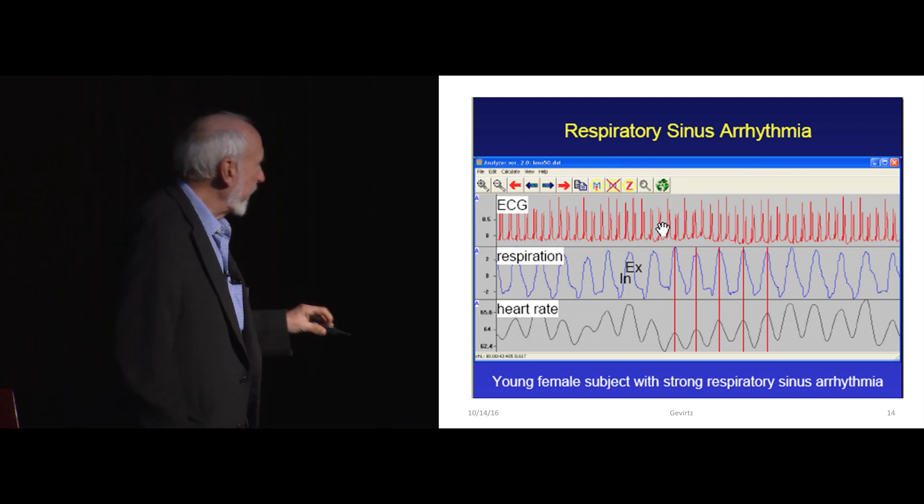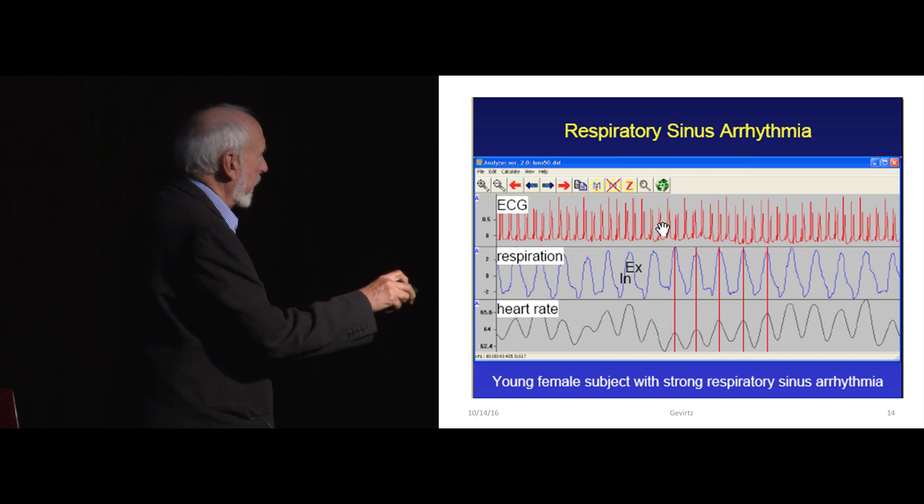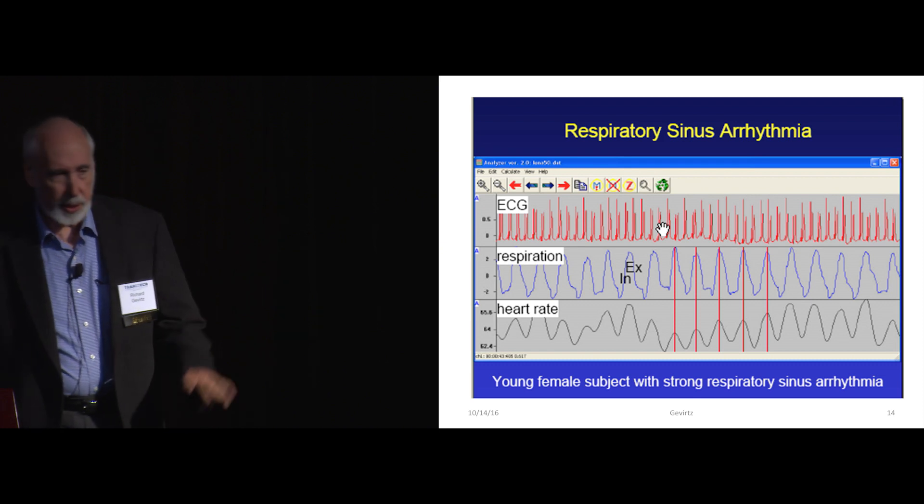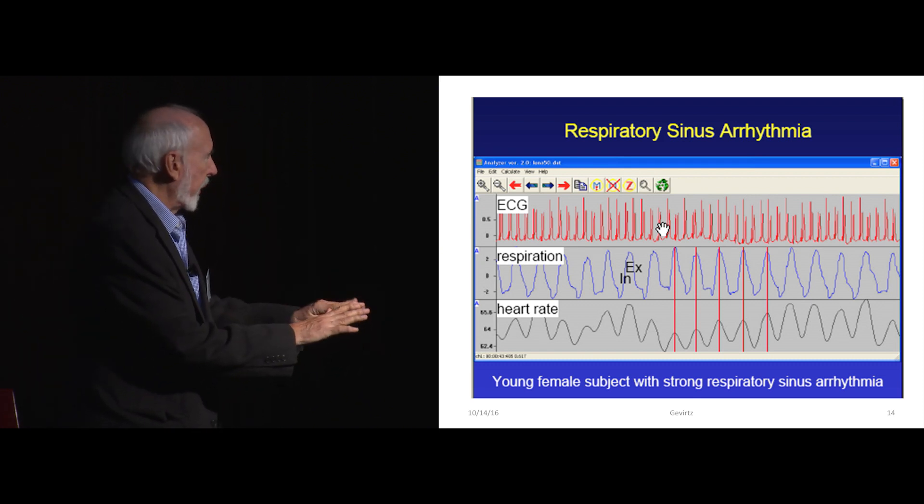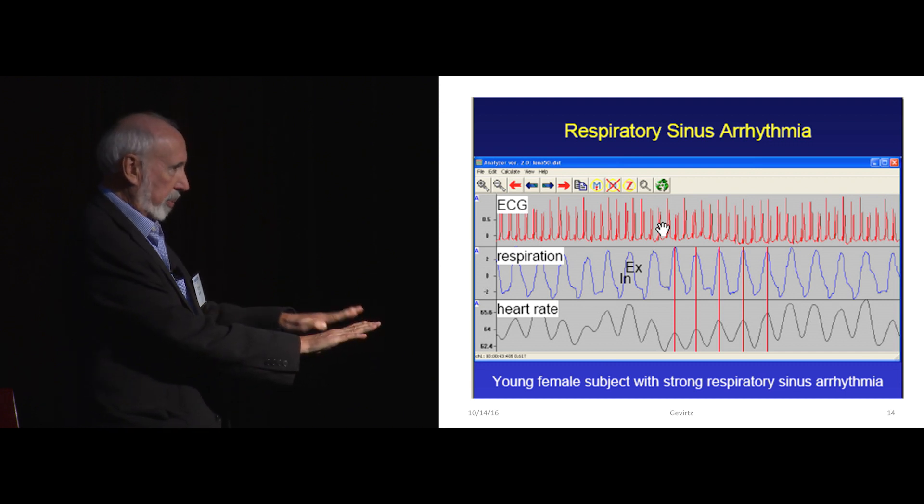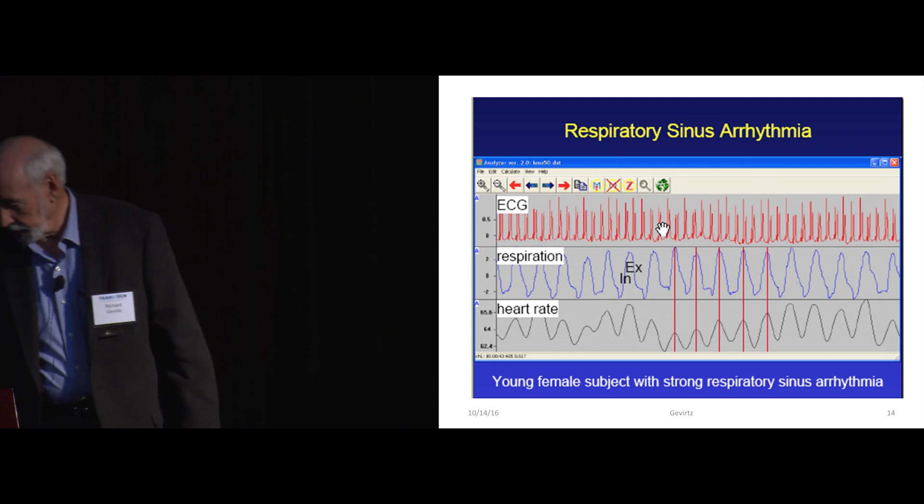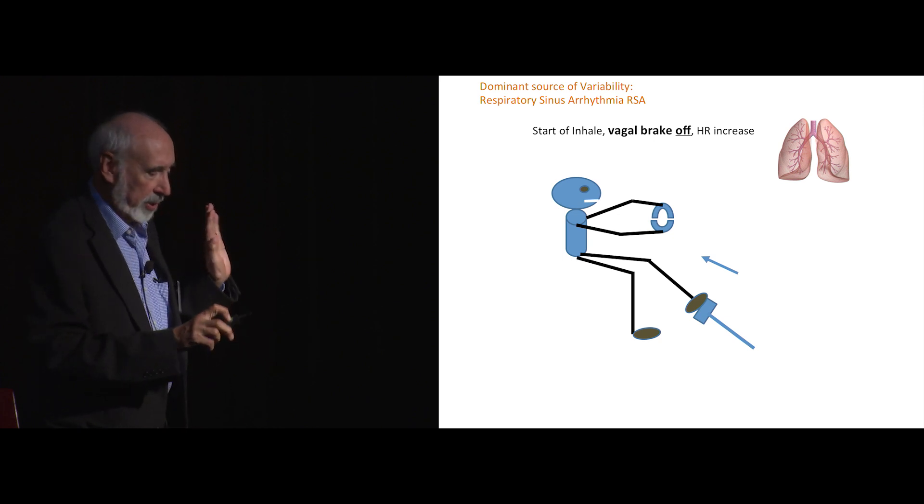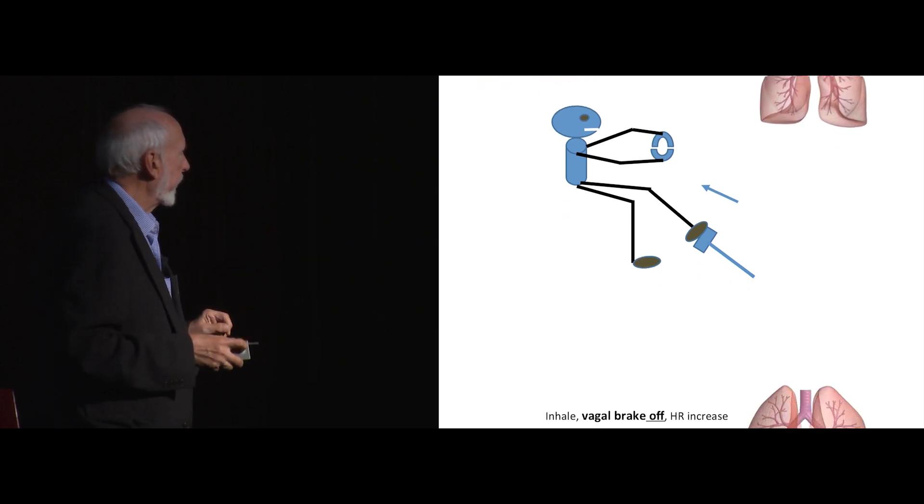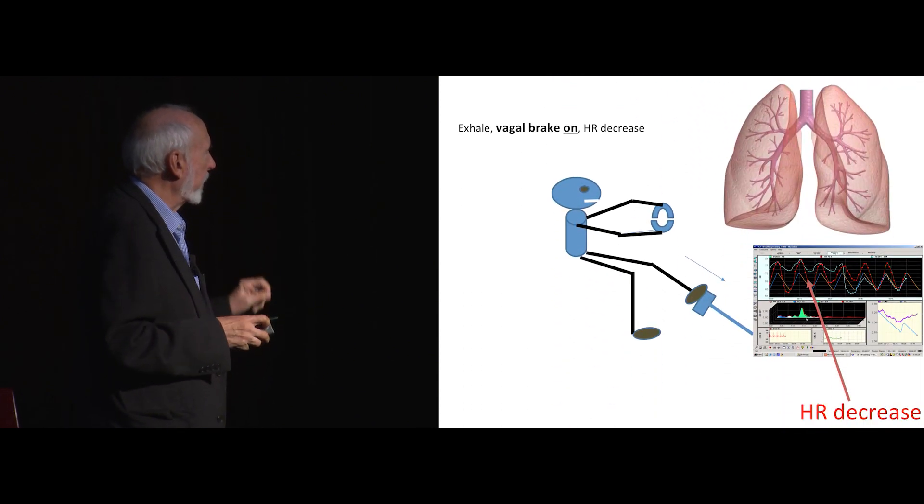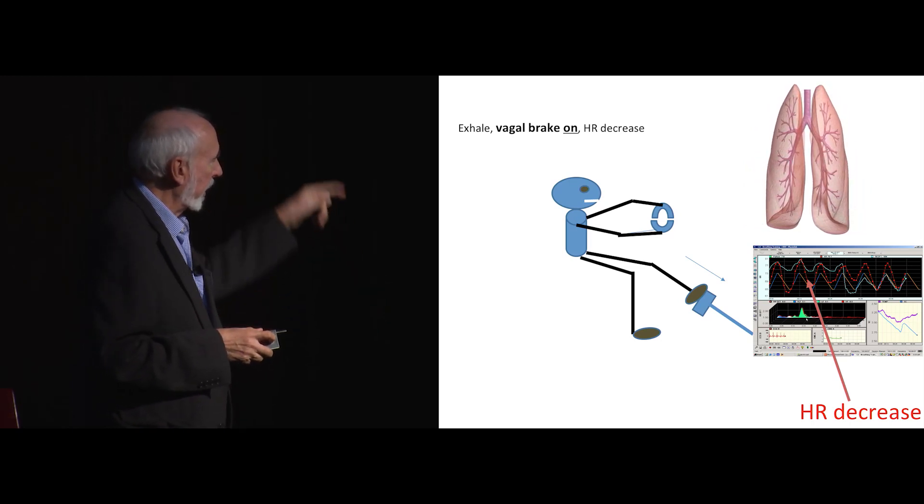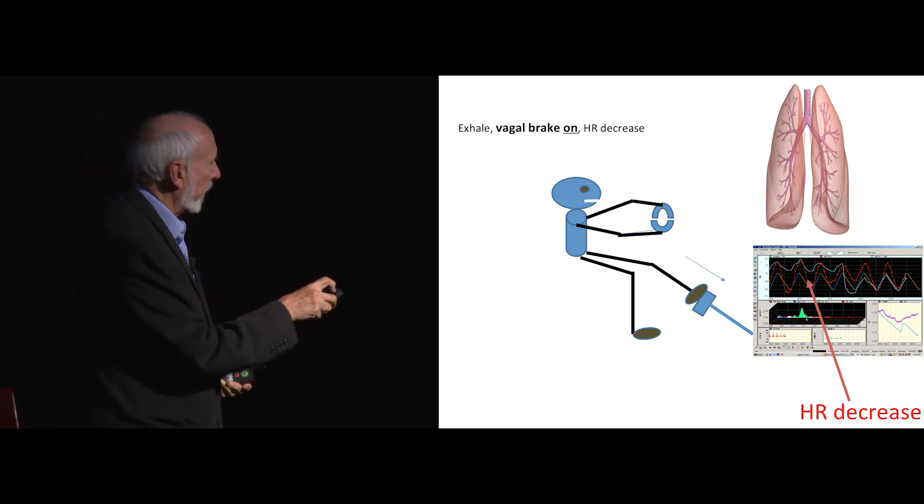So we can use fairly simple tools to be able to get that and get all kinds of information about different aspects of the autonomic nervous system. The main source of variability is called respiratory sinus arrhythmia. It's a reflex from the brainstem to the heart, and if you think about it, it makes a lot of sense. It's a braking system. The vagus is a brake on the heart, and when you breathe in, the brake goes off. When you breathe out, the brake goes on.